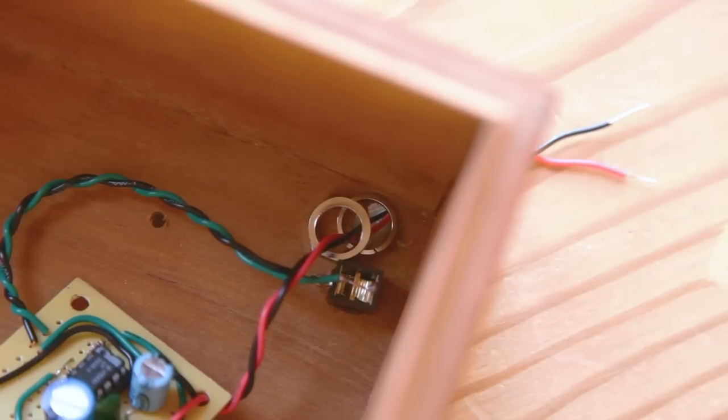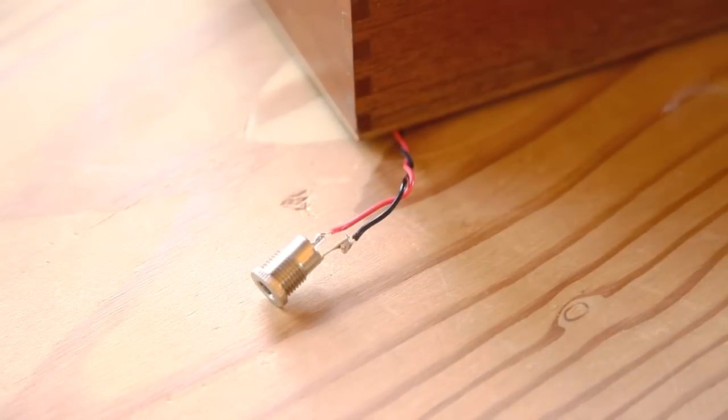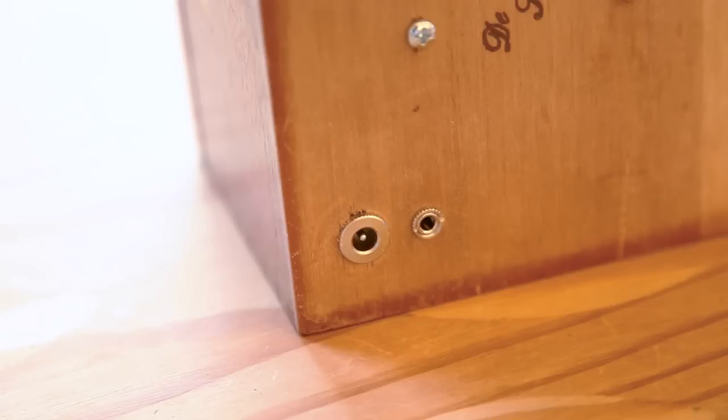You mount the power jack from the outside, so first pass the power wires through the nut, washer, and mounting hole. Solder the ground wires to the outer tab and the power wires to the inner tab, then mount the jack with the nut on the inside of the case.